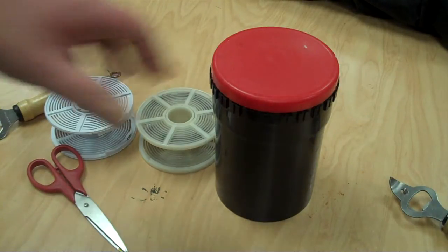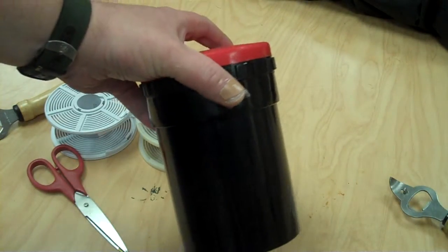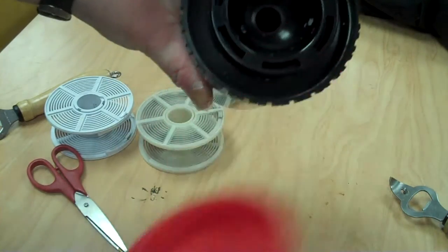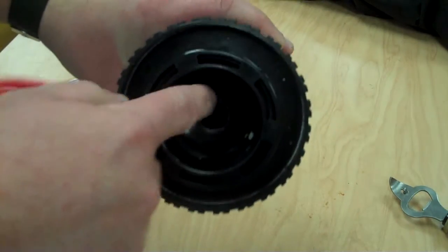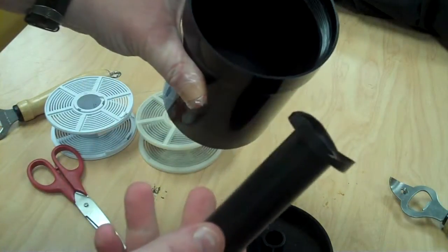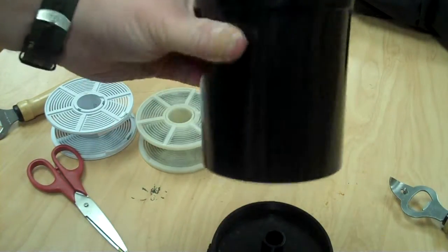So first and foremost, what you're going to need is a developing tank. Now these tanks are made with a light proof lid, pops off, your chemicals go in there and this allows no light to get into it. They unscrew and what you'll find inside is this little peg which actually holds the reels and the empty tank.